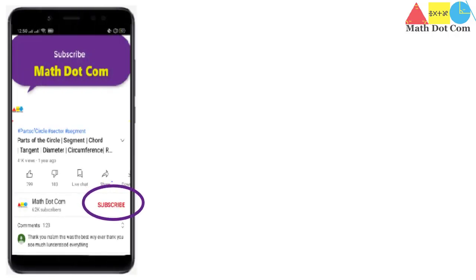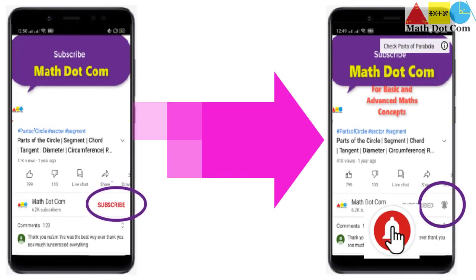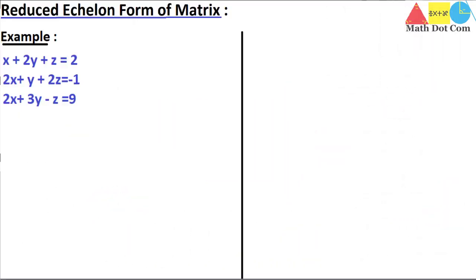Please subscribe and don't forget to hit the bell icon for more video updates. Hello everyone. In our previous lecture we have seen the row echelon form of a matrix, which you can use to solve a system of linear equations where you are given two or three variables and have to find the value of those variables.